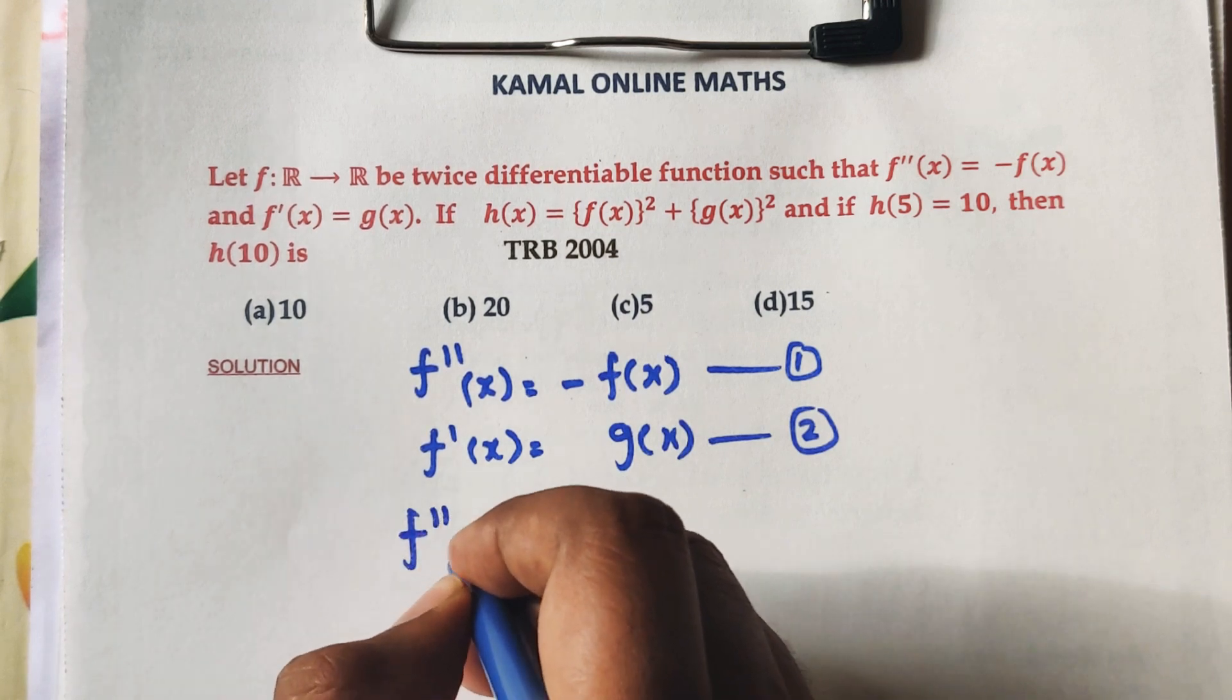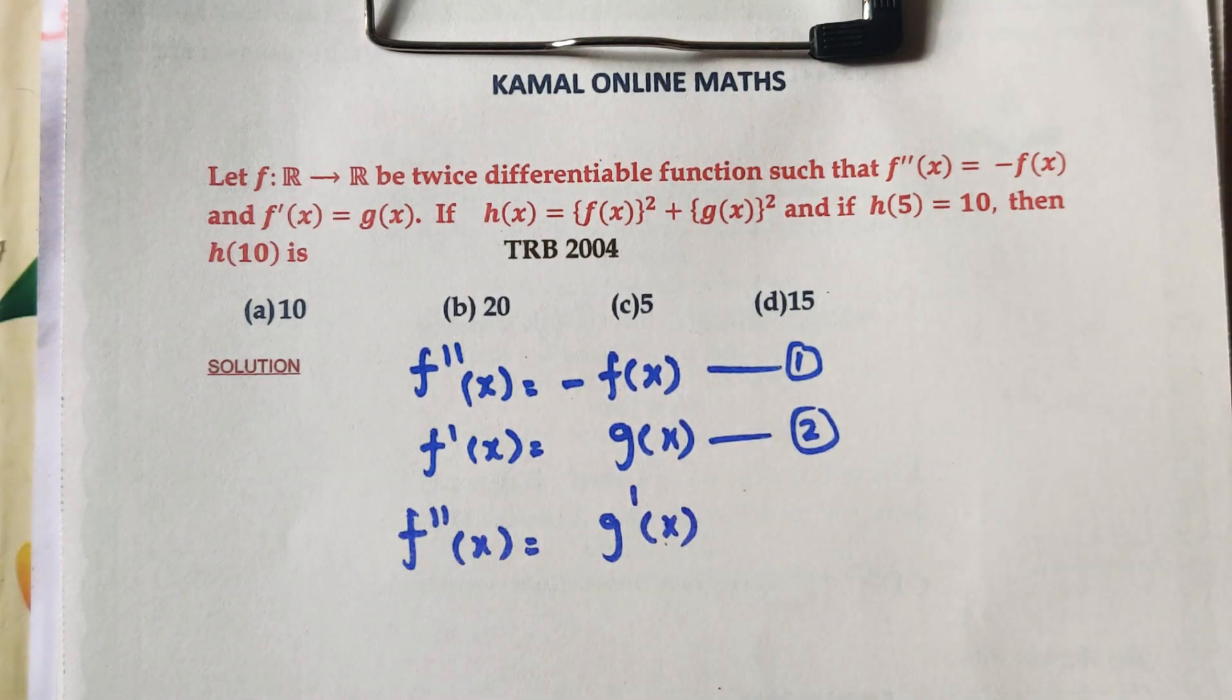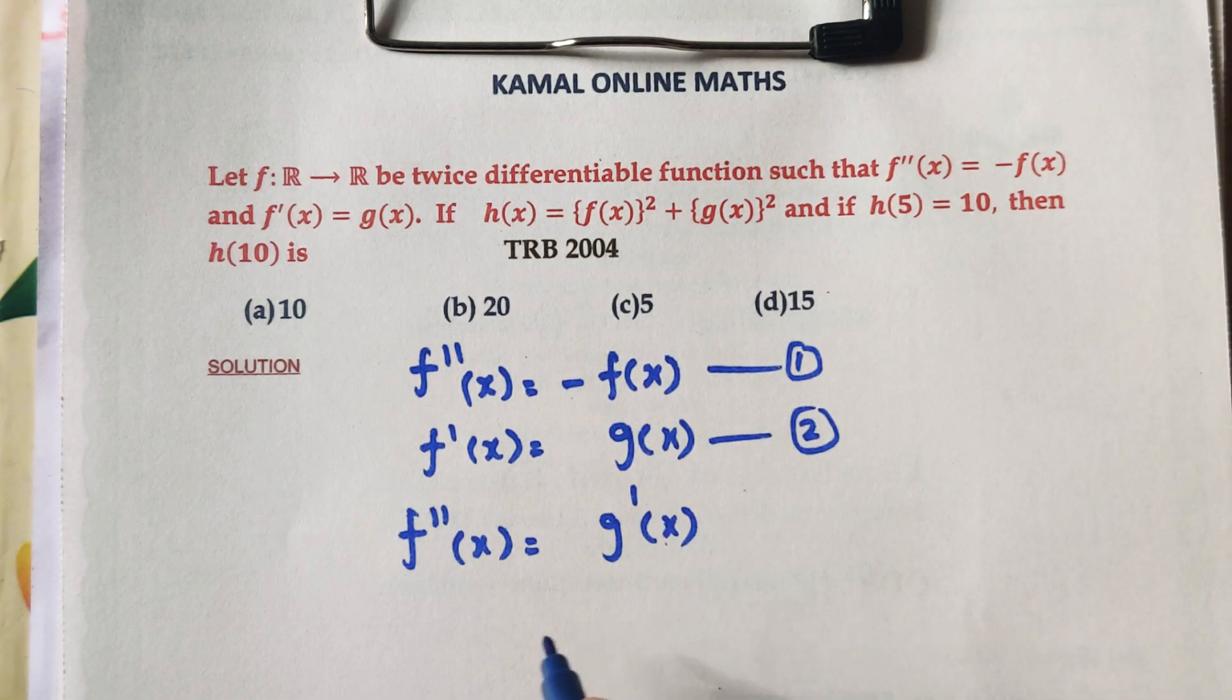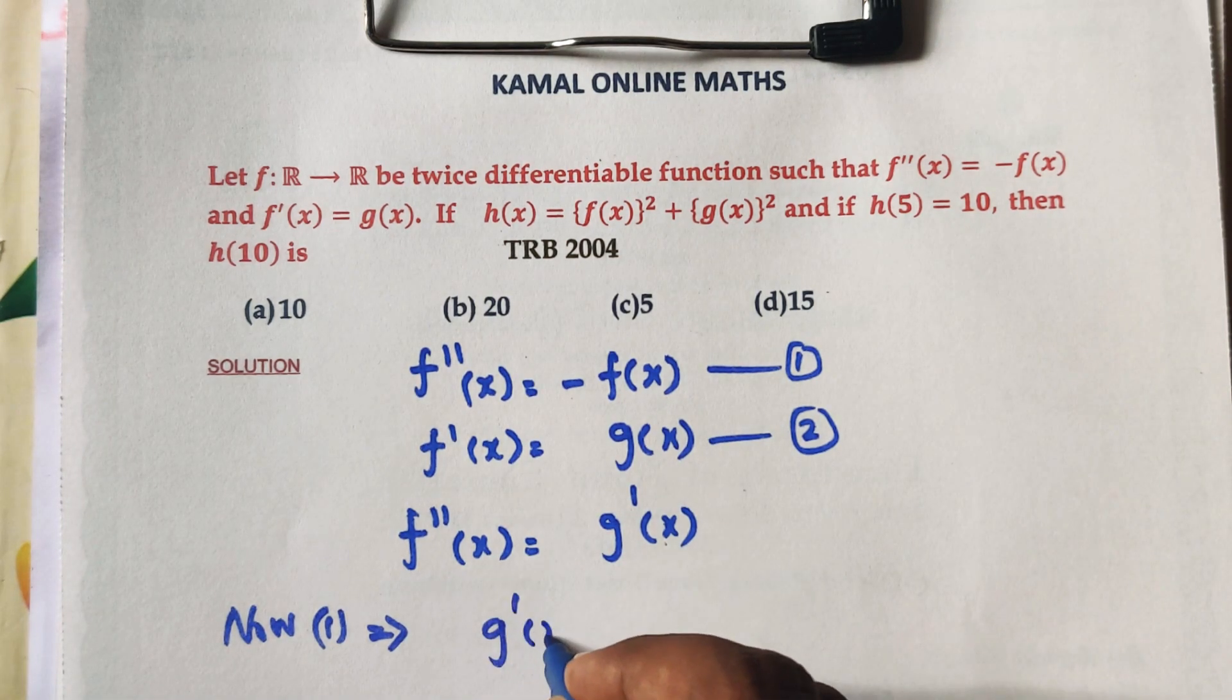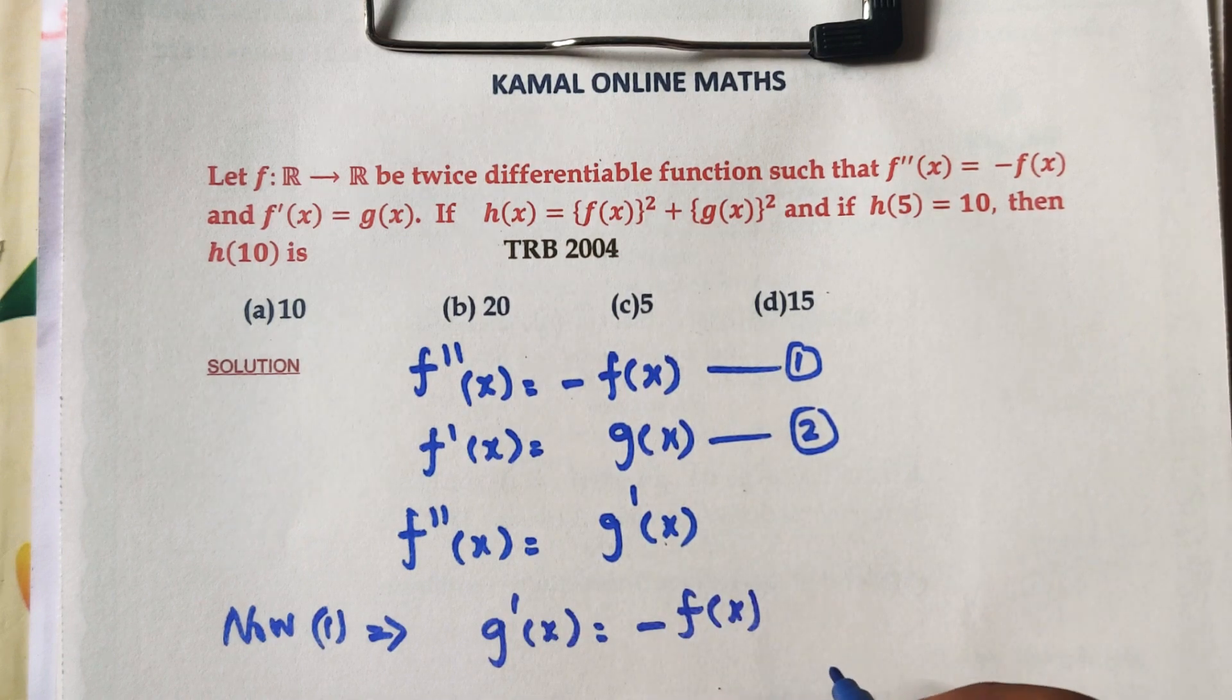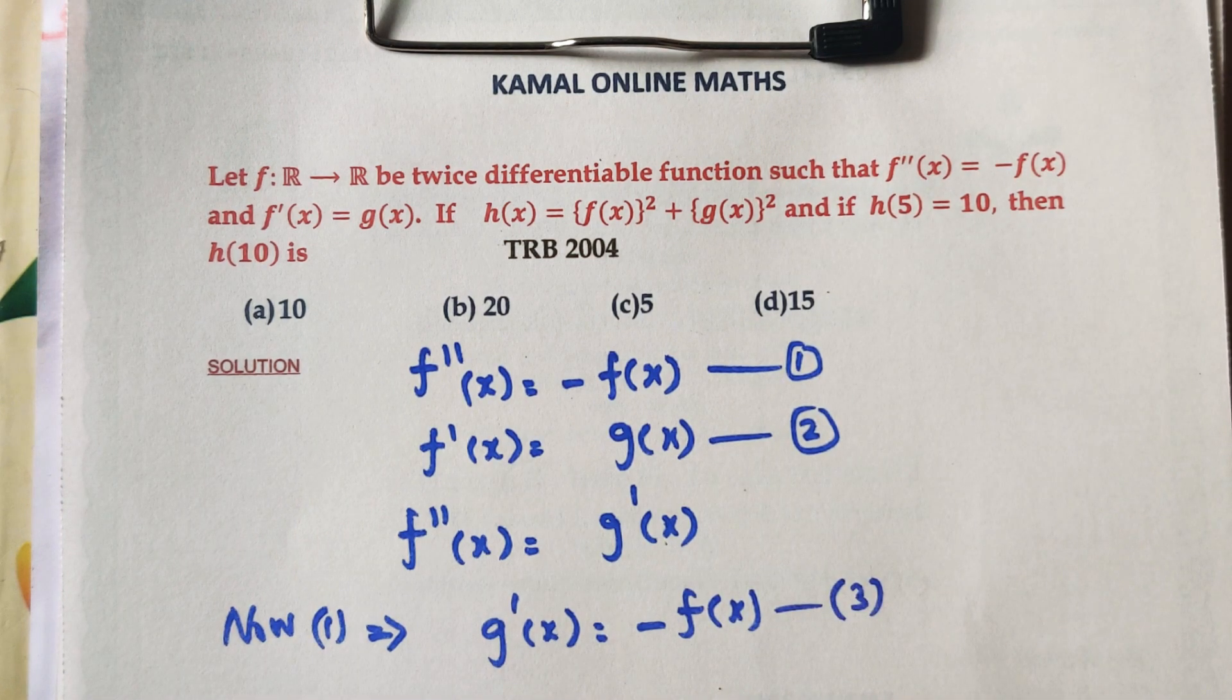F double dash X equals G dash X. Substituting from equation one, G dash X equals minus F of X. This is equation three.